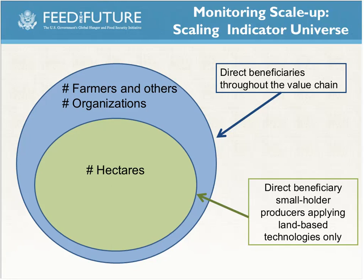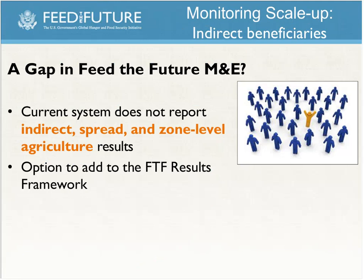Beyond the three core indicators, especially for scaling up, there's the whole issue of indirect beneficiaries. Feed the Future interventions will have significant impacts on population groups outside your direct beneficiary pool, and this is a recognized gap in the current Feed the Future M&E plan. One proposed option is to add indicators that can capture this type of spread to the Feed the Future results framework.